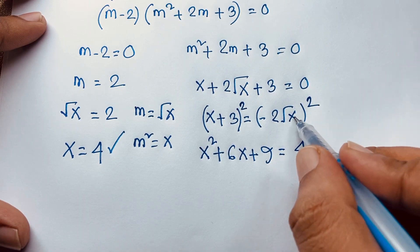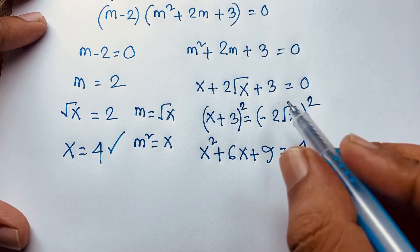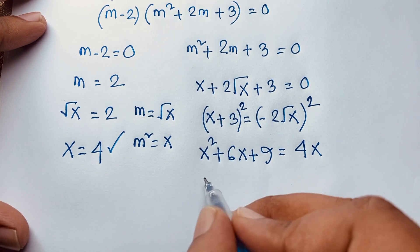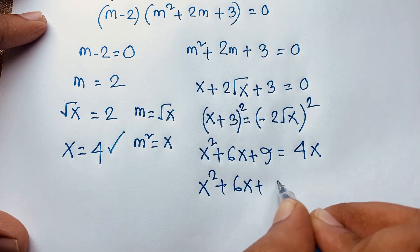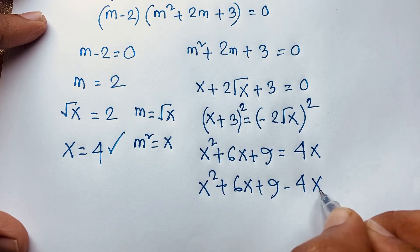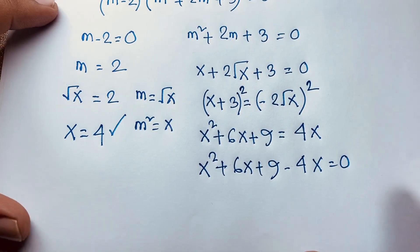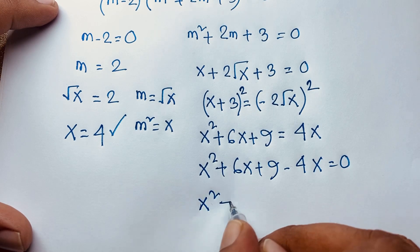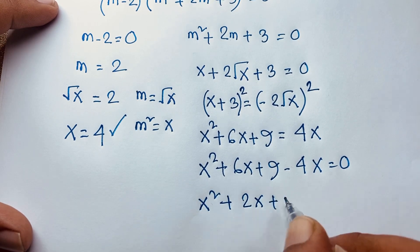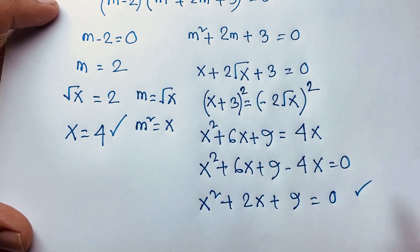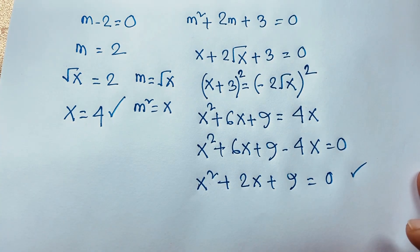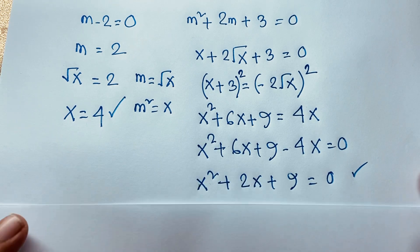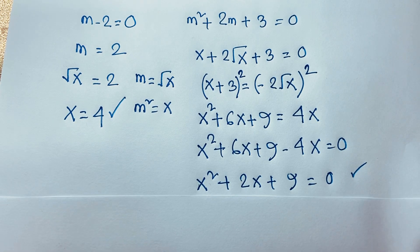The square root cancels on the right. Expanding (x plus 3)²: that is x² plus 6x plus 9 equals 4x. Moving 4x to the left: x² plus 2x plus 9 equals 0. So we have found a nice quadratic equation: x² plus 2x plus 9 equals 0.